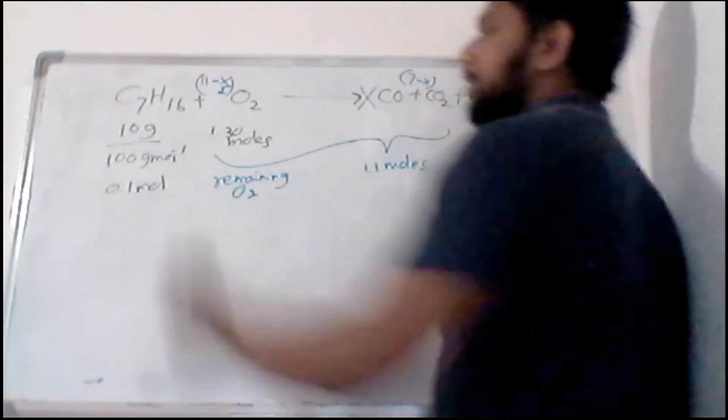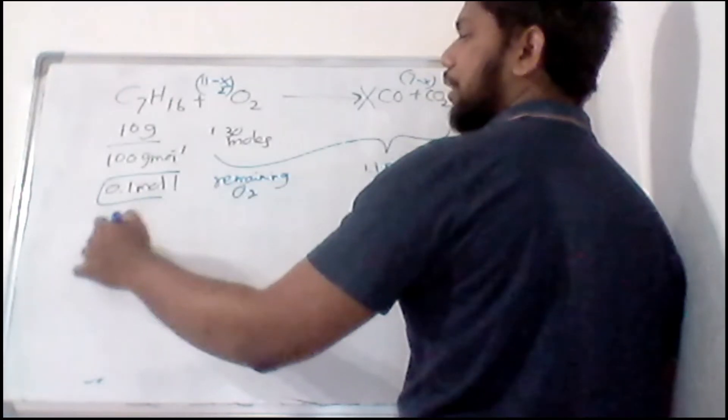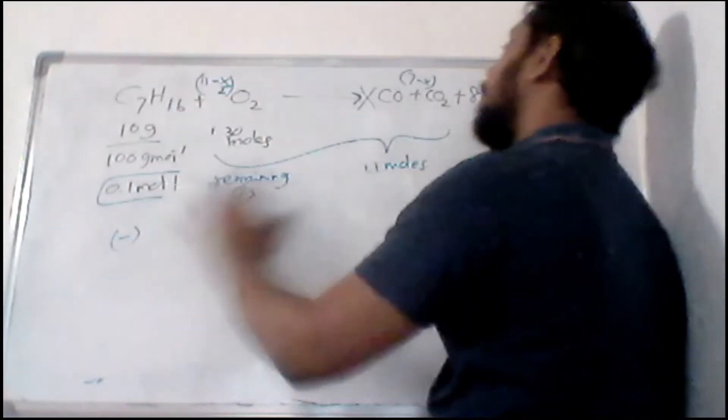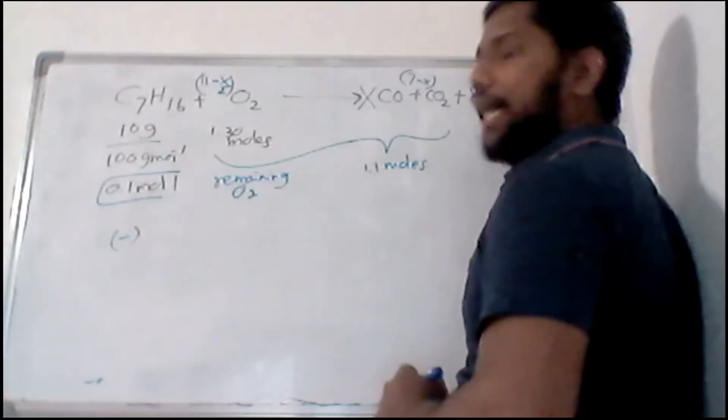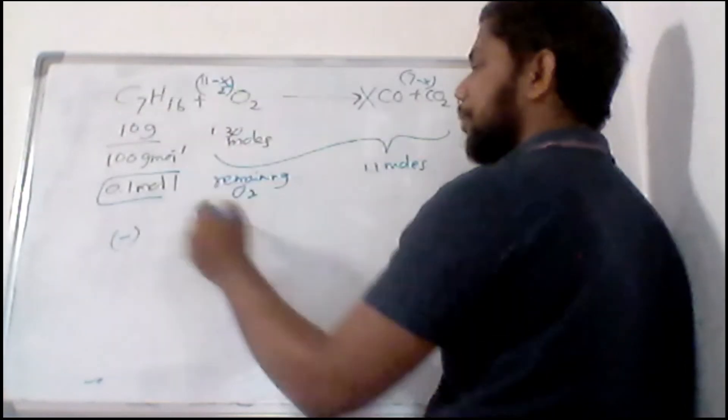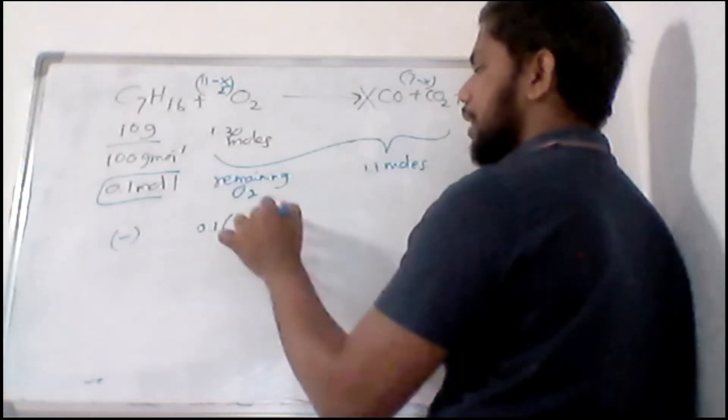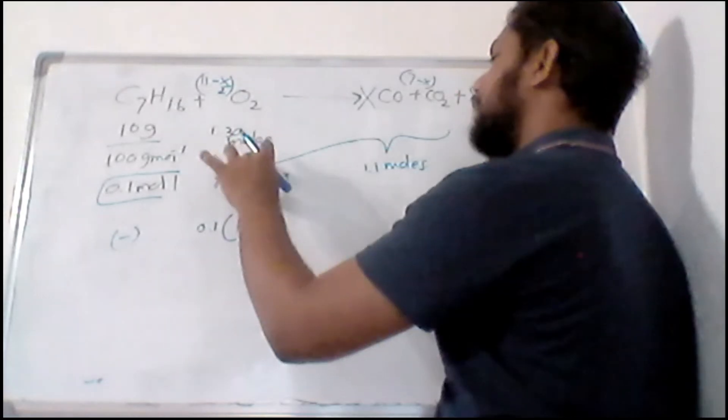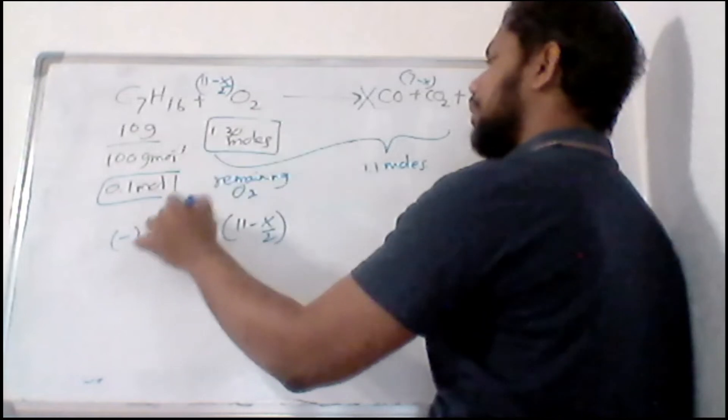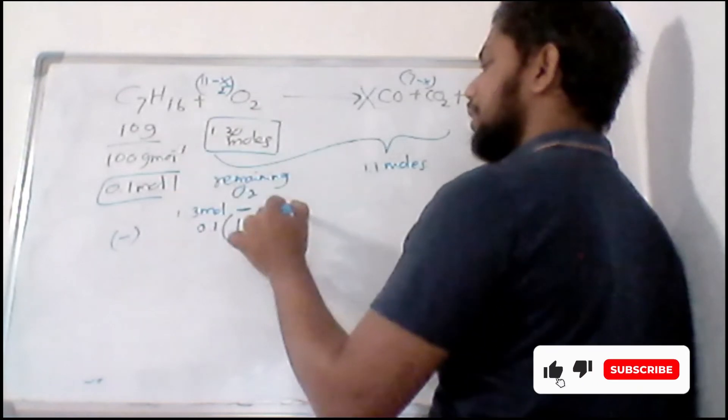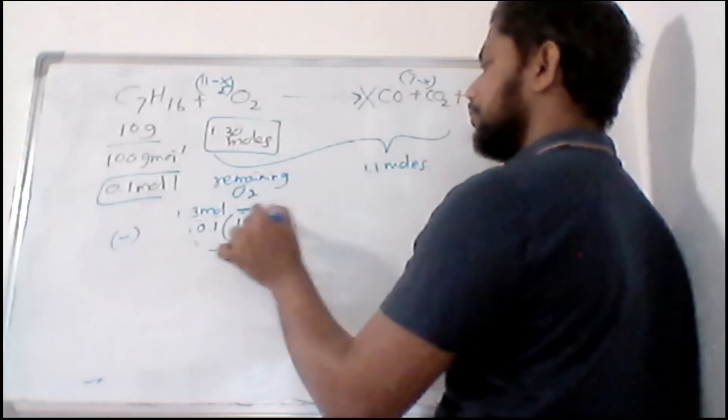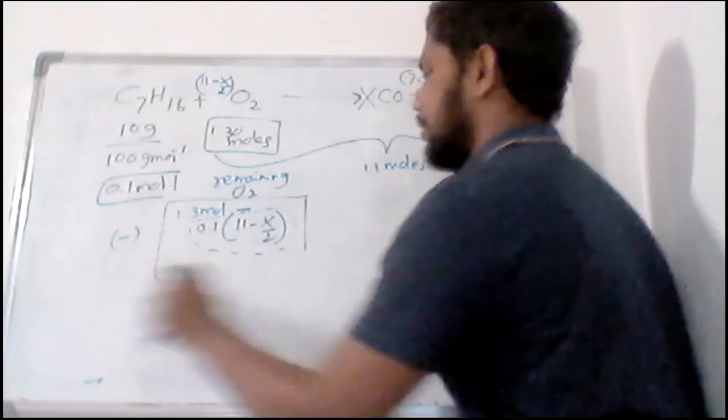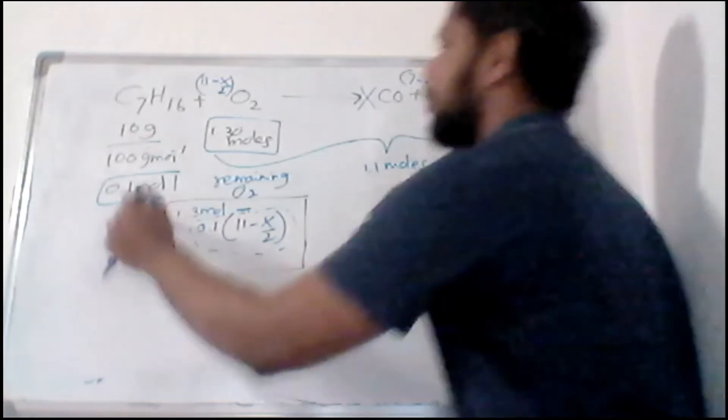Then you need to understand 0.1 moles of heptane is going to be completely reacting because they have given the complete combustion. And here, how much O2 that is going to be reacted is 0.1 times the stoichiometry, basically 0.1 times 11 minus x over 2. So this is the amount that is going to react. So what is the remaining? Remaining would be 1.3 moles minus the reacted amount. So this could be the remaining amount. And there is no remaining amount from the heptane.